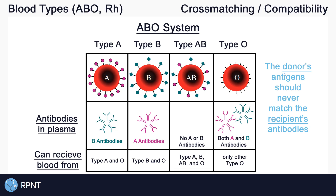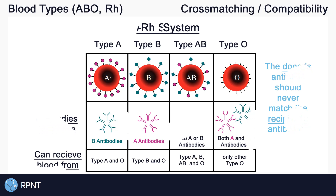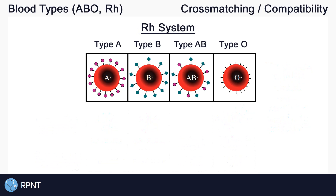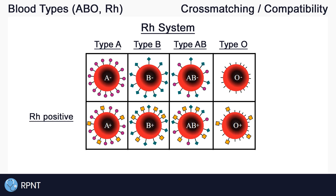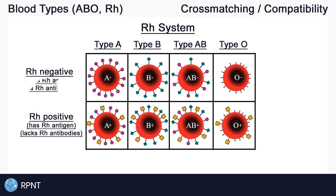Now we have gone over the four ABO blood types and their compatibilities. Next we have the Rh factor. You can think of the Rh factor as just another antigen that is either present or not on the red blood cells. If the Rh antigen is present it is represented as positive, and if the Rh antigen is not present it is represented as negative. Rh positive blood has Rh antigens and lacks Rh antibodies, while Rh negative blood lacks the antigen but has Rh antibodies.